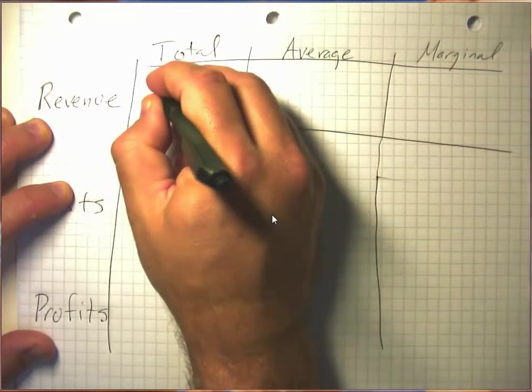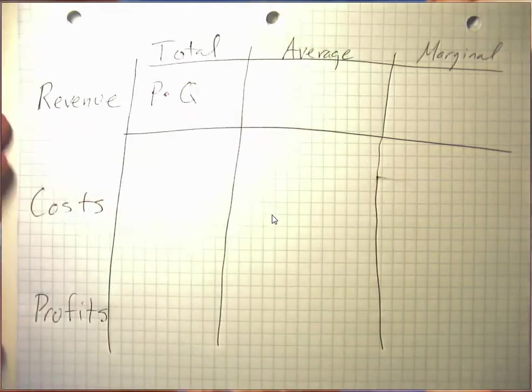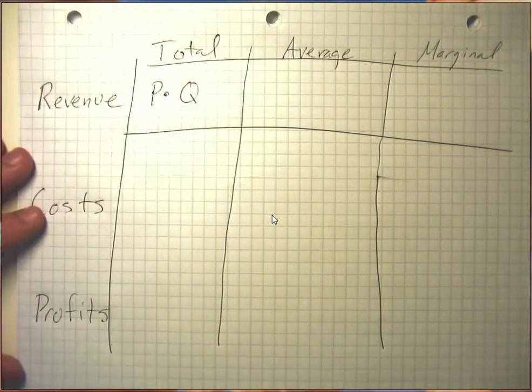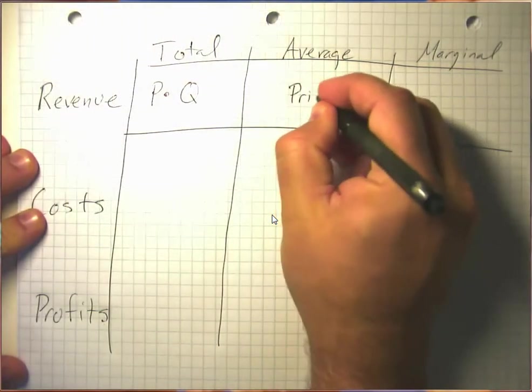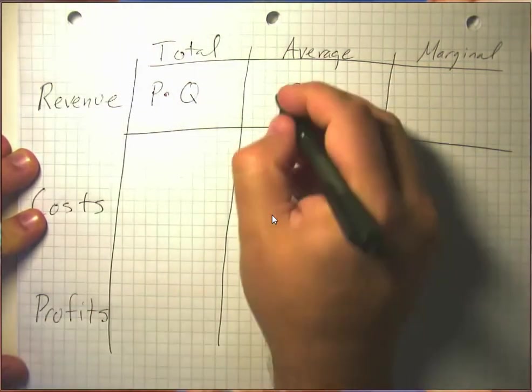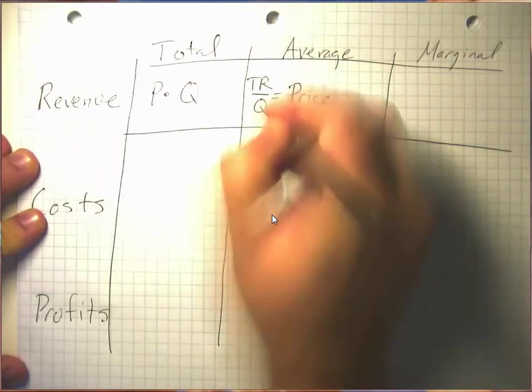Total revenue is going to be the price that we sell our output for times the quantity of output that we sell. Average revenue is just price, because average revenue is total revenue over the quantity we sell.